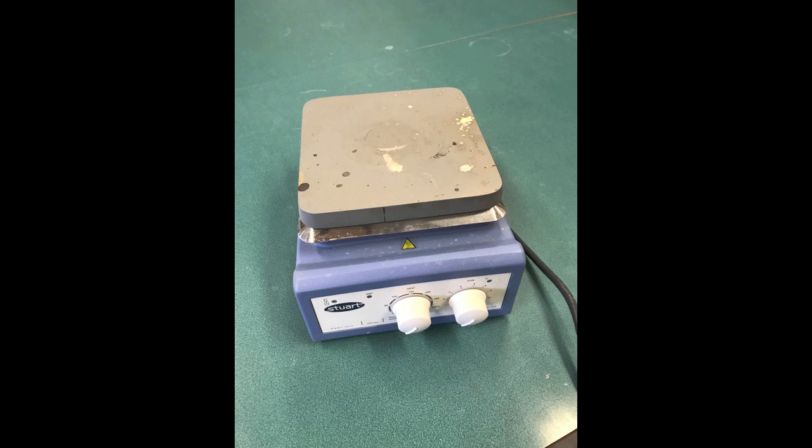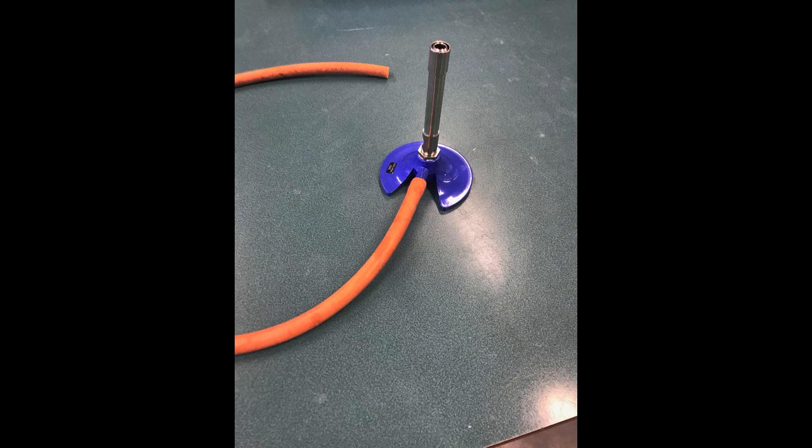Hot plates are electronic ways of heating up liquids, good for flammable liquids. Whereas Bunsen burners use flames and should not be used for flammable liquids.